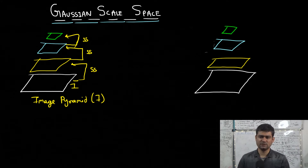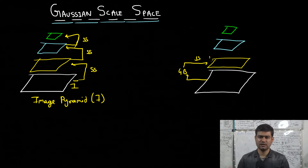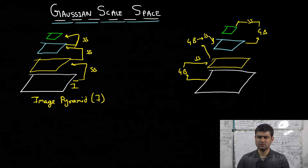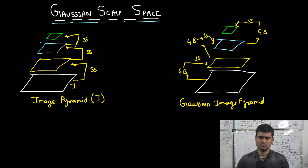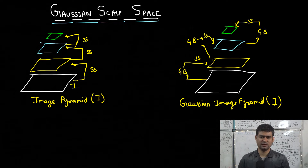In the Gaussian image pyramid, we start with an image. To obtain the next image in the pyramid, we first apply Gaussian blur to the image and then sub-sample it. We repeat this process — apply Gaussian blur then sub-sample — to get each successive image. This is the Gaussian image pyramid of image I, and its advantage over the plain image pyramid is that we get rid of the effect of aliasing.